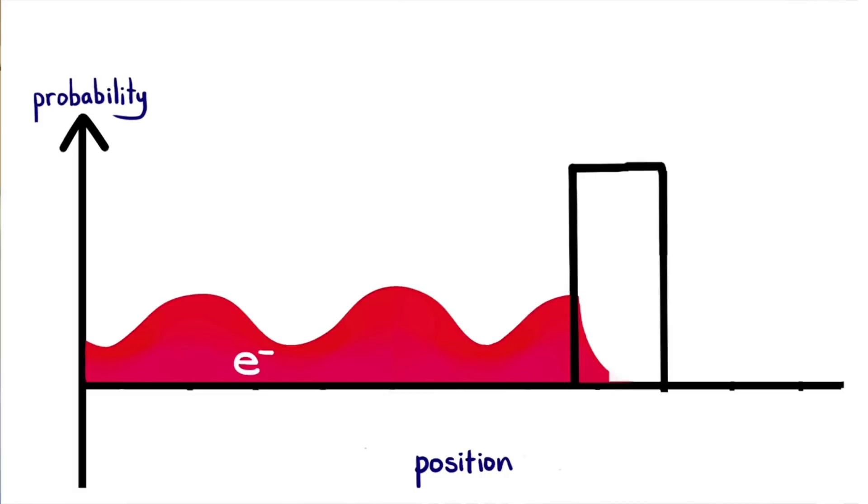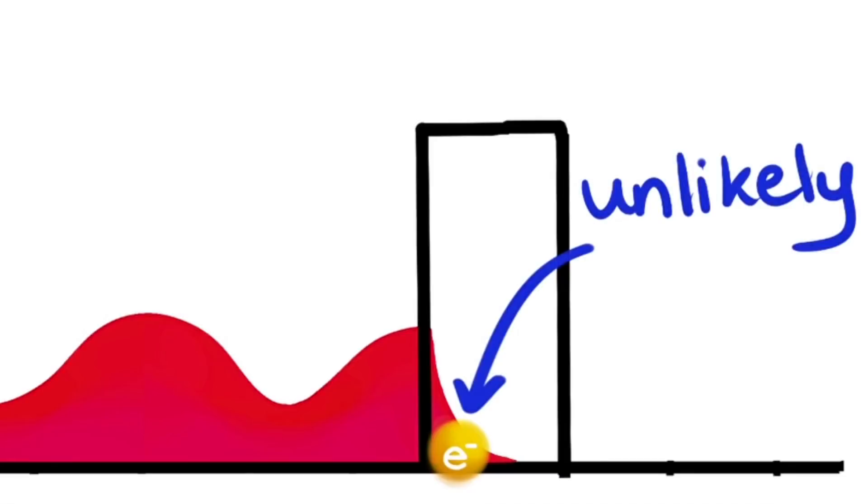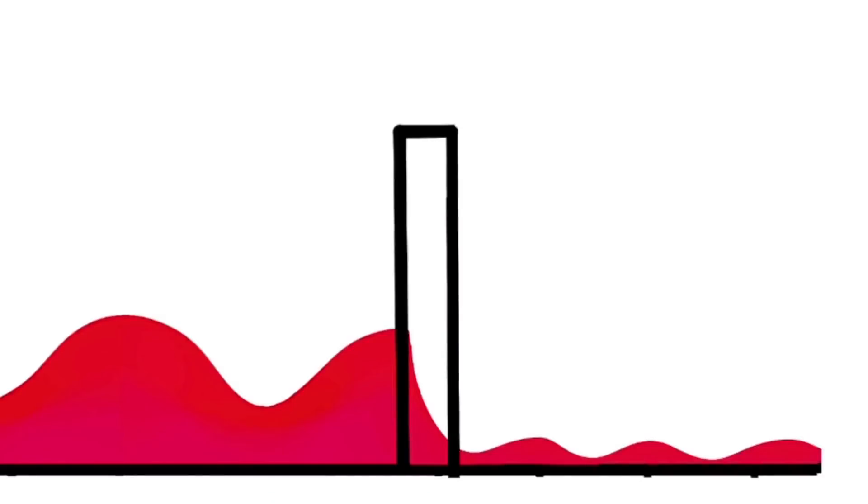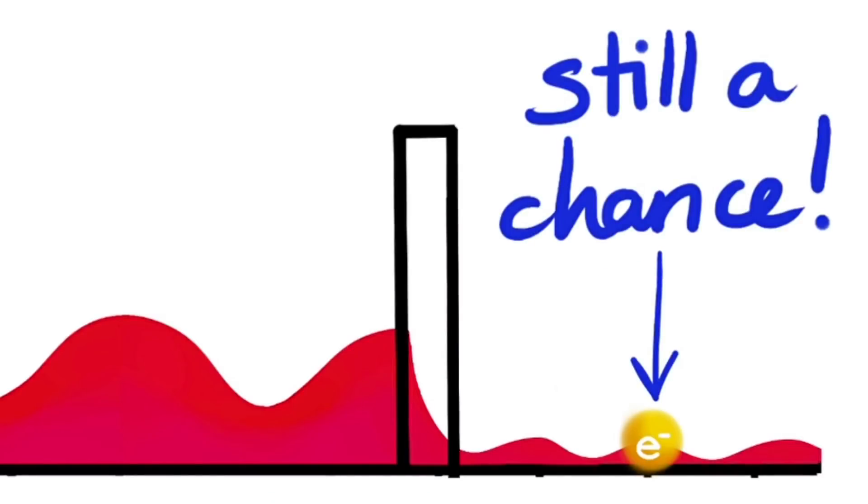Sometimes the wave can slip through the barrier. When the wave is in the barrier, the chances of finding an electron there go down by a lot. But if the barrier is thin enough, the wave can reach the other side before it dies off. So what does that mean? Remember, the wave tells us how likely it is to find the electron there.